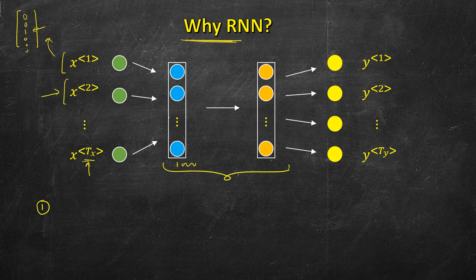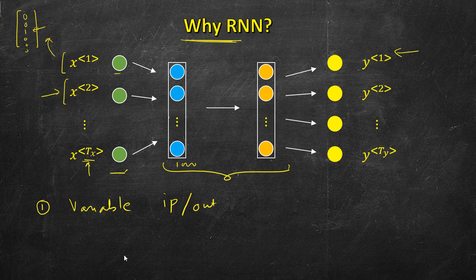In this case we can have sentences with different numbers of words, so a plain network is not suitable. That is one reason: variable length of inputs and outputs. In named entity recognition we had a one-to-one relationship — for each word we denote whether it's a name or not (0 or 1), so input and output length are the same. But in tasks like translation from English to French, the number of input words may not equal the number of output words.